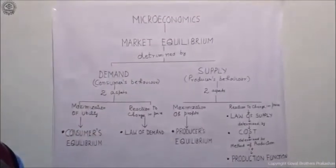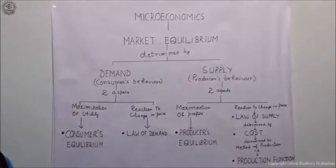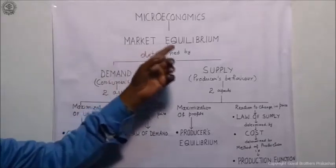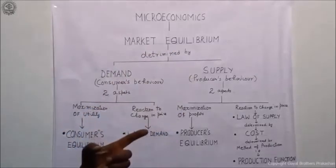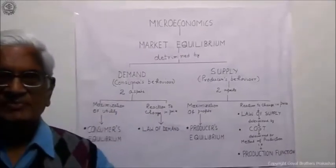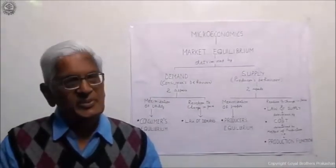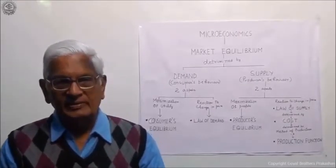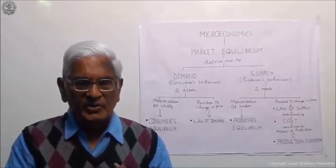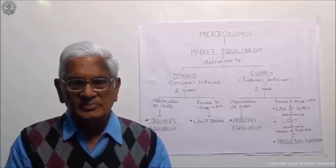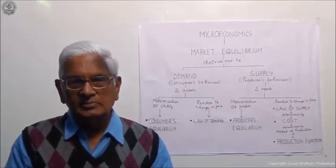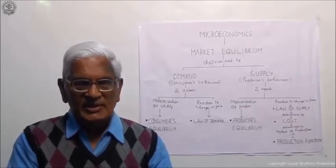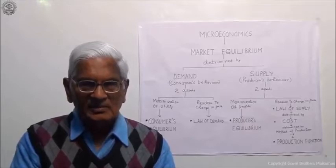Market equilibrium is determined by two forces: demand and supply. Any equilibrium is determined by these two forces. For example, the market for a good is in equilibrium when the demand for that good equals the supply of that good.